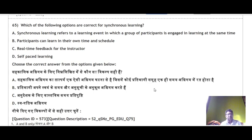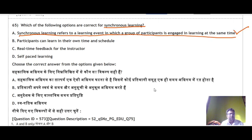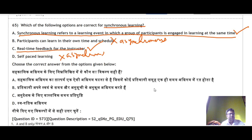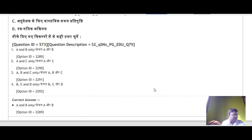Question 65: Which of the following options are correct for synchronous learning? Synchronous learning refers to a learning event where a group of participants is engaged at the same time simultaneously — this is true. 'Participants can learn in their own time and schedule' — this is asynchronous, so wrong. 'Real-time feedback for the instruction' — this is true for synchronous. 'Self-paced learning' — this is asynchronous, so wrong. Correct options for synchronous learning are A and C — option number B.